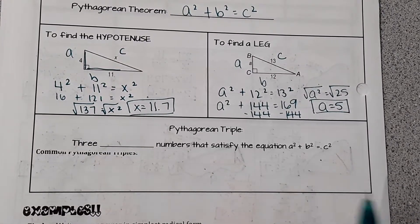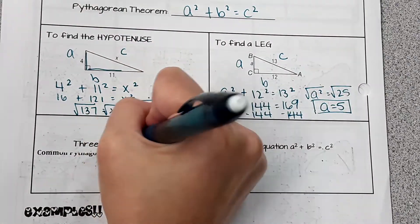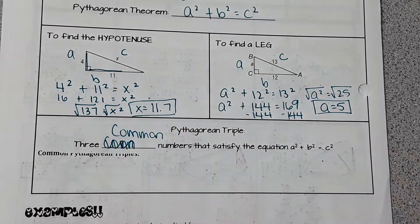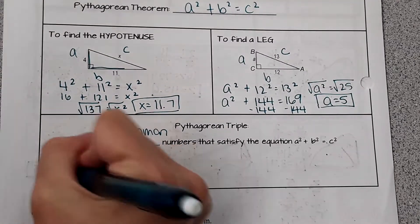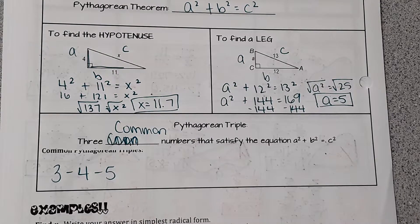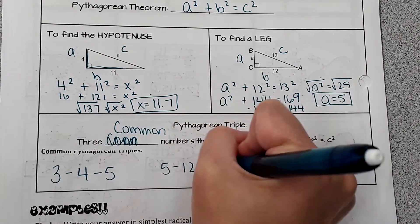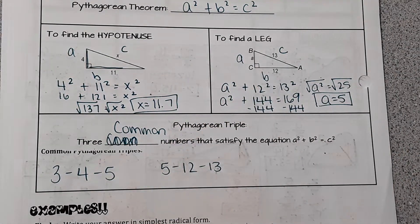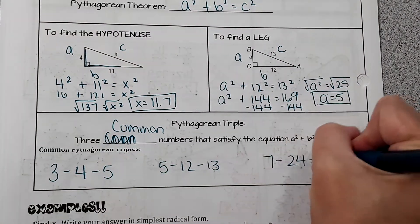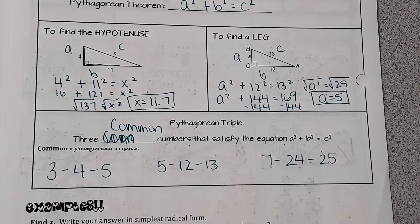The next concept is called a Pythagorean triple. These are three common numbers that satisfy the equation a squared plus b squared equals c squared. One of those is 3, 4, and 5. So if you see 3 and 4 as two sides of a right triangle, you know the third side is 5. Also, the numbers 5, 12, and 13 come up as common side lengths of right triangles. And so does 7, 24, and 25. Anything similar — for example, doubling these numbers gives 6, 8, 10 — is also a right triangle.